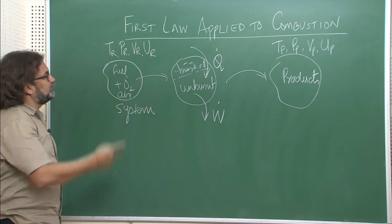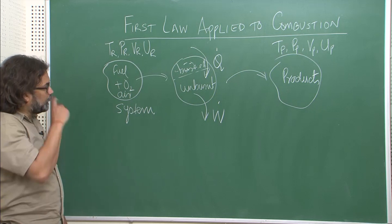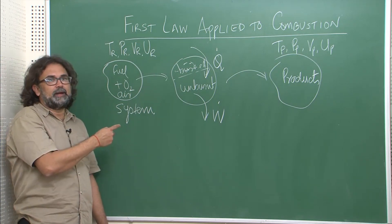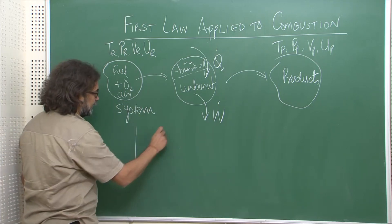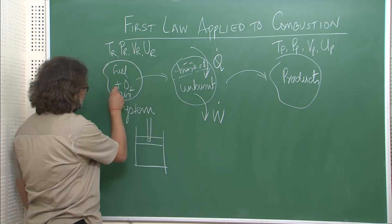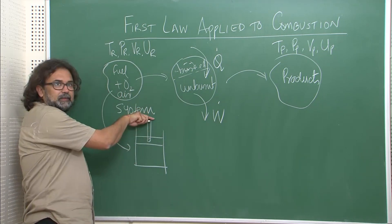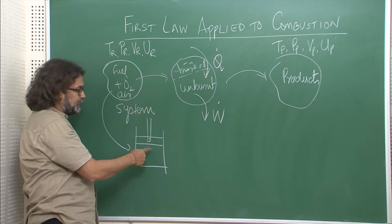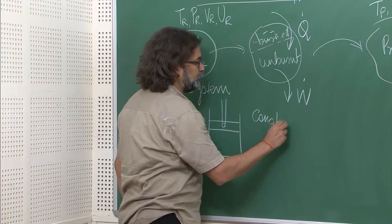Now in this process we want to see how we can apply the first law. Naturally this process can take place under different boundary conditions. For example, if we take a piston and stop it, the entire reaction will take place at constant volume. So we can do it at constant volume.